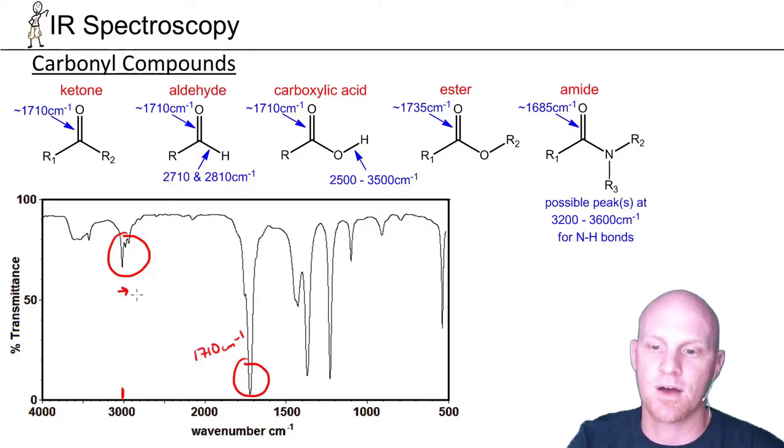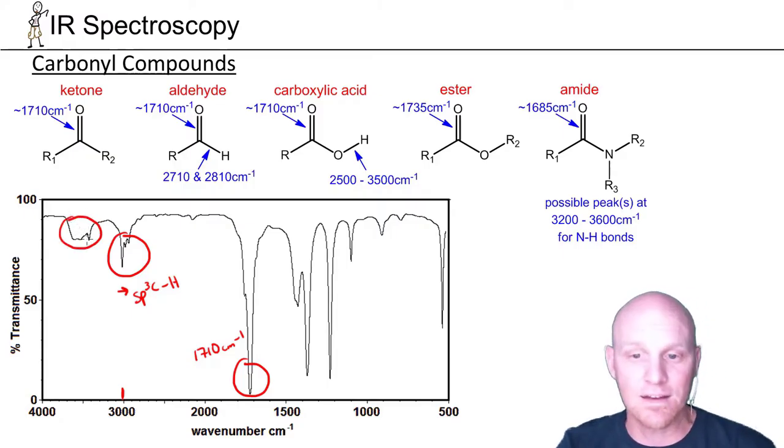We've also got this signal over here, just to the right of 3000. That's your sp3 C-H bonds. And then you've got this peculiar-looking signal. It turns out this is nothing. Over in this range, maybe you thought it might be an OH or an NH. I said it's nothing, nothing you have to worry about.